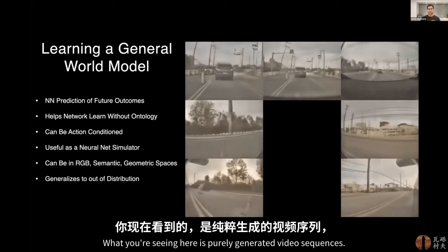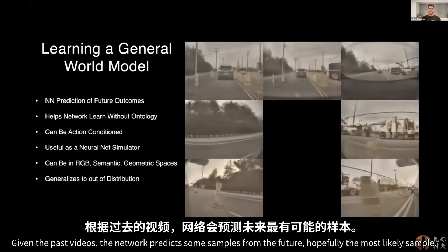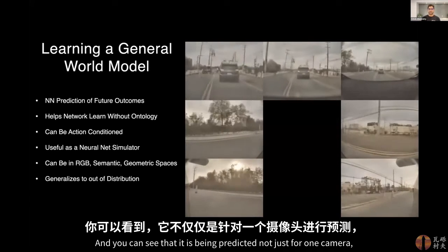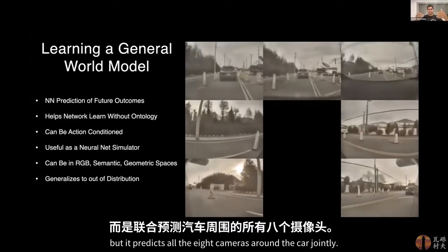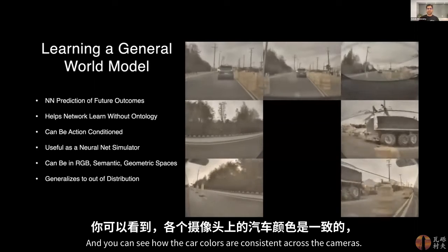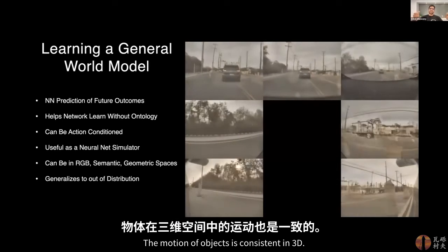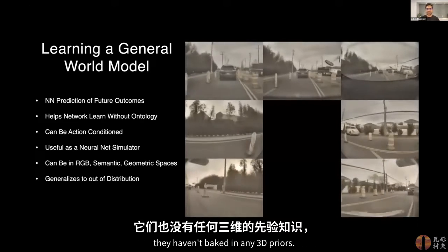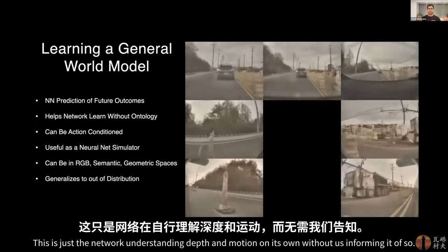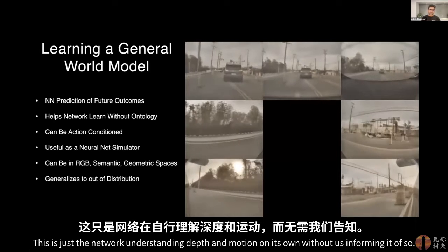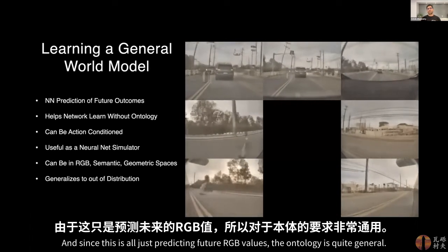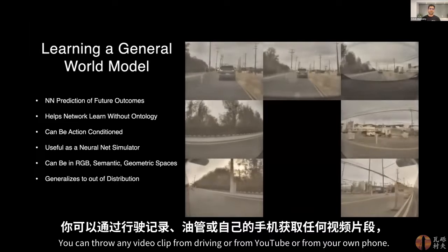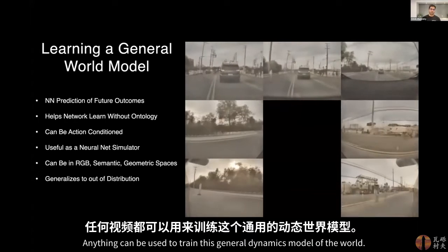What you're seeing here is purely generated video sequences. Given the past videos, the network predicts samples from the future — hopefully the most likely sample. It predicts not just one camera, but all eight cameras around the car jointly. You can see that car colors are consistent across cameras, and the motion of objects is consistent in 3D. Even though we have not explicitly asked it to do anything in 3D or baked in any 3D priors, the network understands depth and motion on its own. Since this is all predicting future RGB values, the ontology is quite general — you can throw any video clip from driving, YouTube, or your own phone to train this general dynamics model of the world.